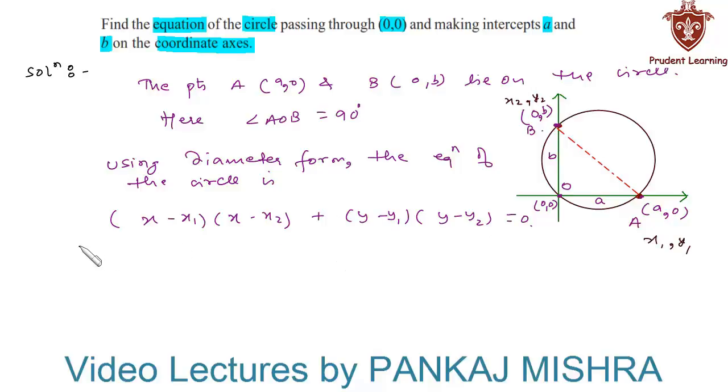Here we have (x - a)(x - 0) + (y - 0)(y - b) = 0. This implies that (x - a)(x) + (y)(y - b) = 0.